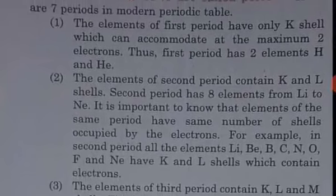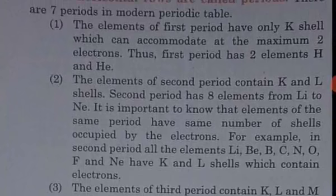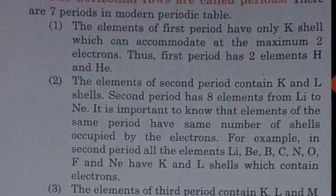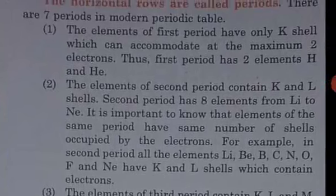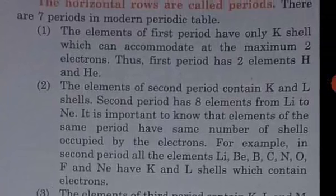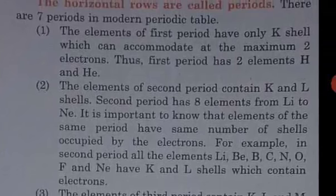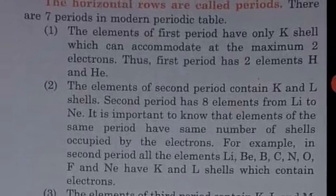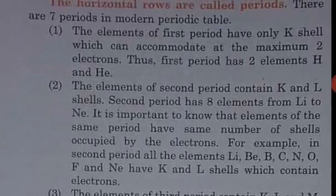The long form of the periodic table is based on the fact that the physical and chemical properties of elements are a periodic function of their atomic number. The long form of the periodic table consists of seven horizontal rows called periods and eighteen vertical columns called groups. It is closely associated with the electronic configuration of elements. A period begins with the filling of a particular shell and ends only when the shell is complete according to the Bohr-Bury scheme.